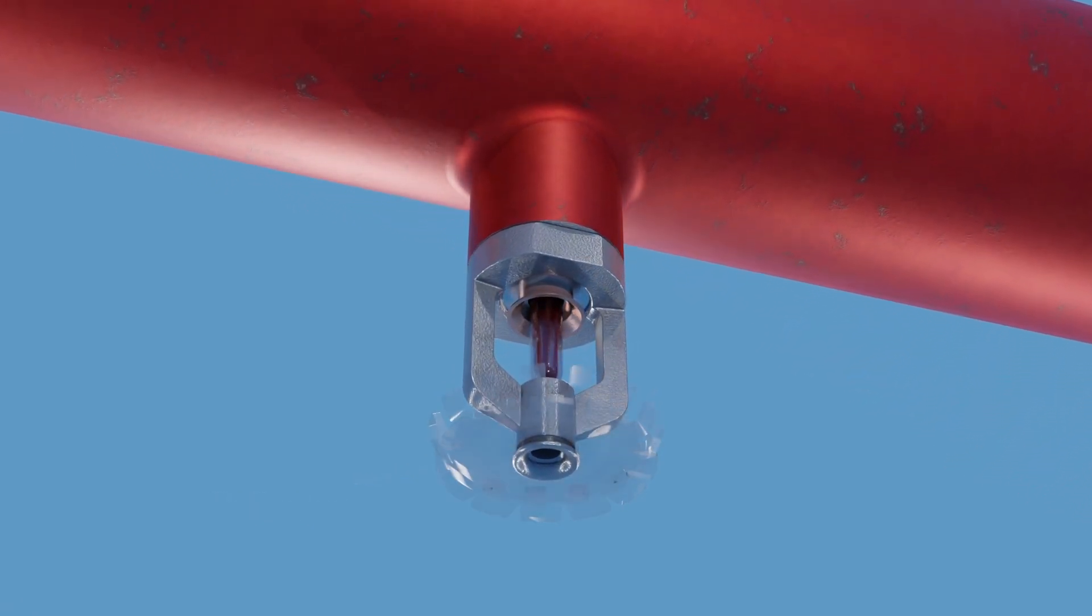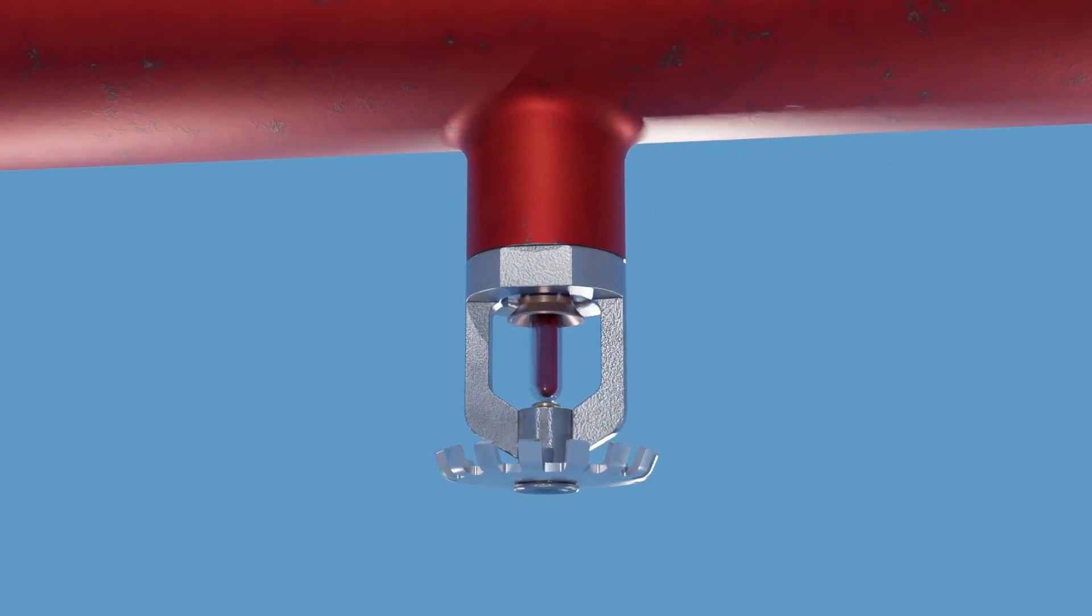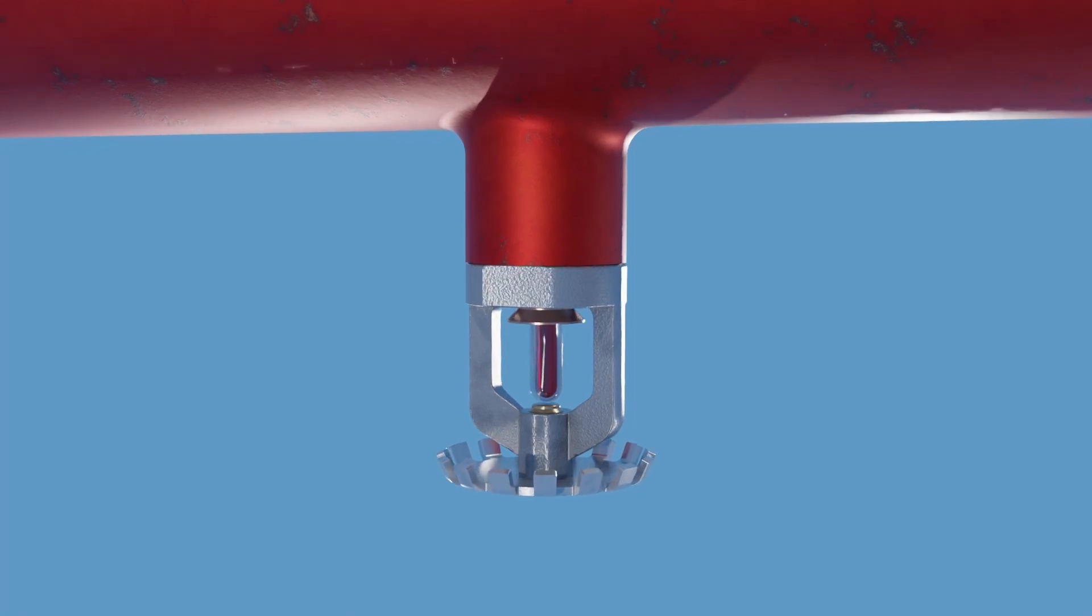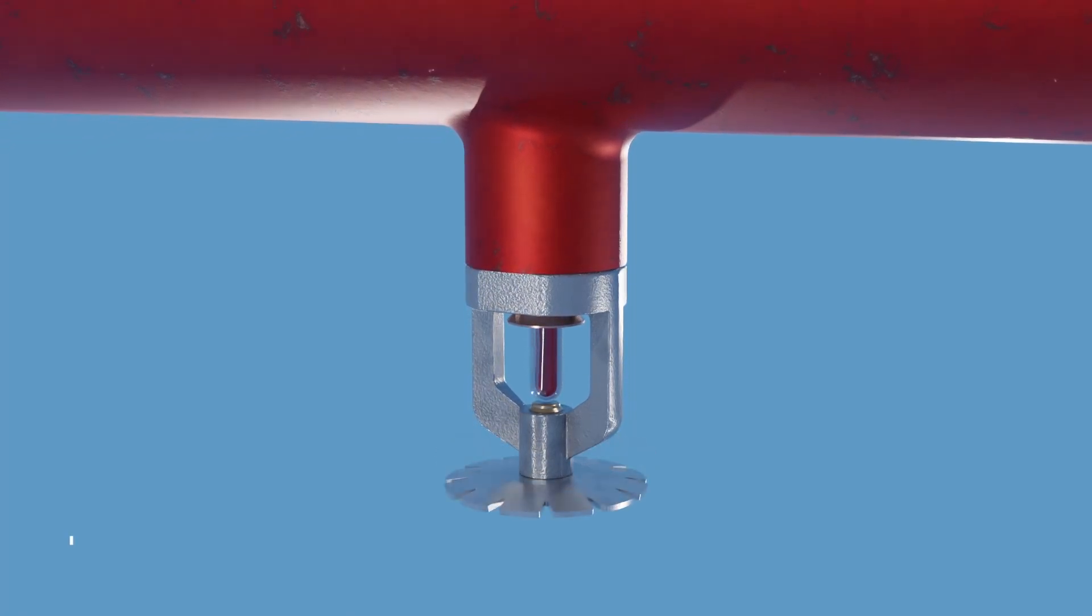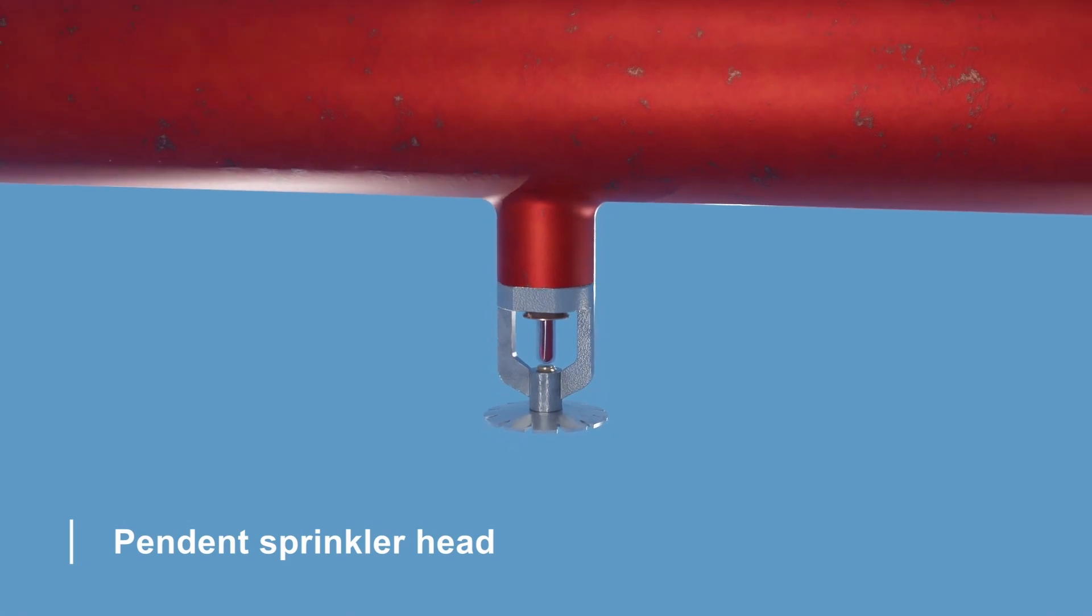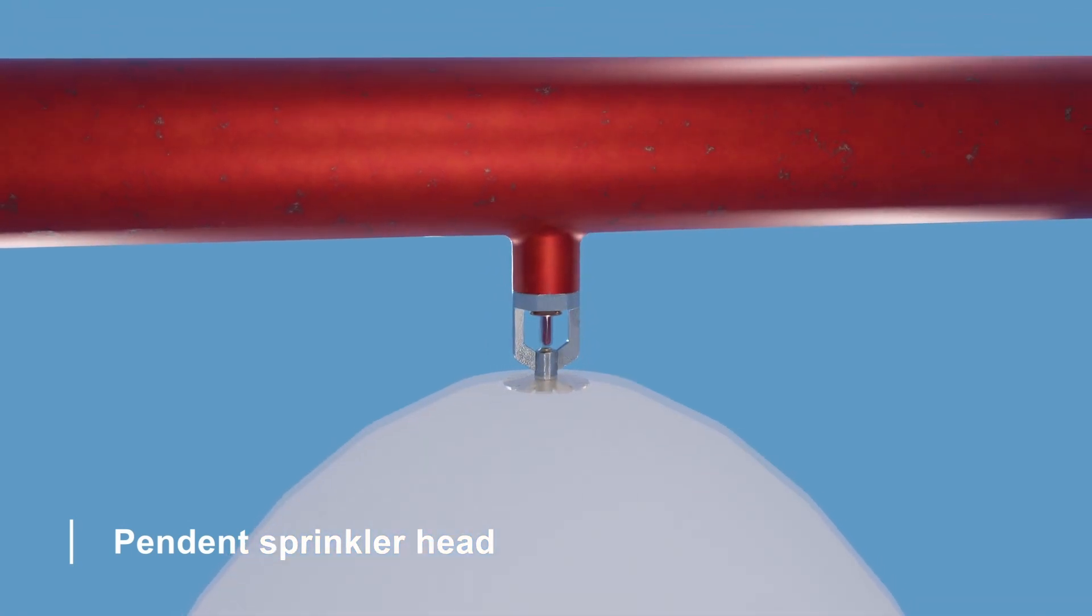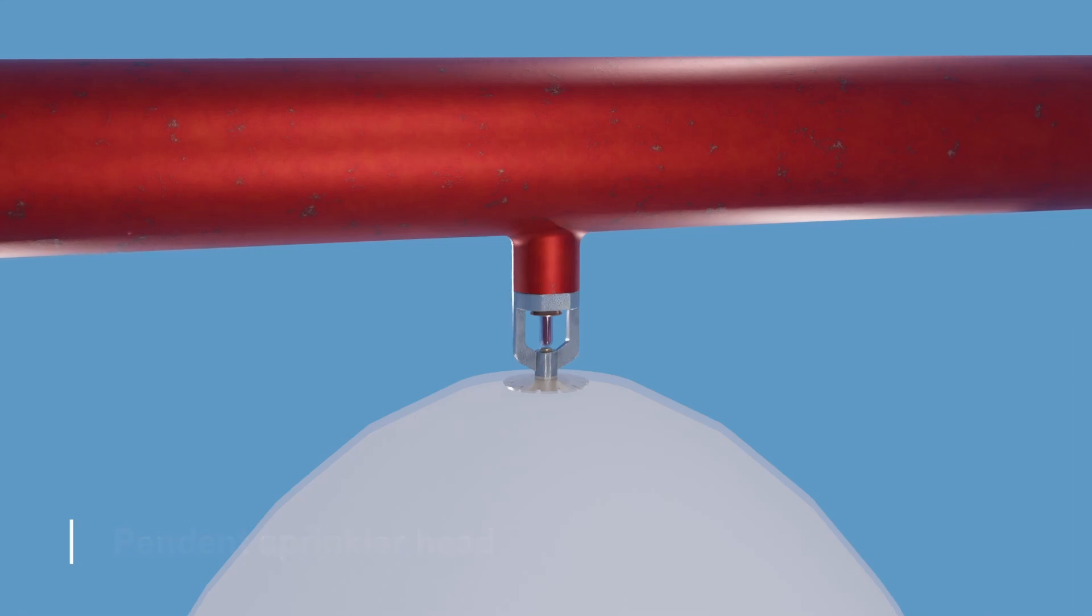There are several sprinkler head types designed for specific applications, each using a different deflector. Let's explore the two most common types available. The pendant sprinkler head is the most common type. It is installed hanging down from the ceiling pipes and directs water downward in a conical spray pattern using a convex deflector.